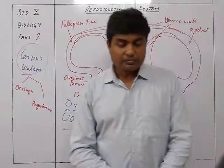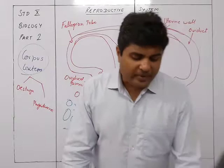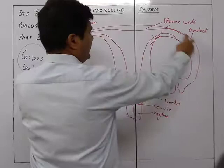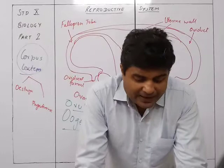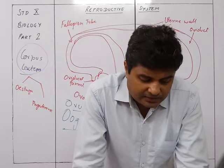Now we move on to the oviduct. The two oviducts, also called fallopian tubes or uterine tubes, are about 12 cm long. Near each corresponding ovary, each oviduct has a funnel-shaped opening called the oviductal funnel.